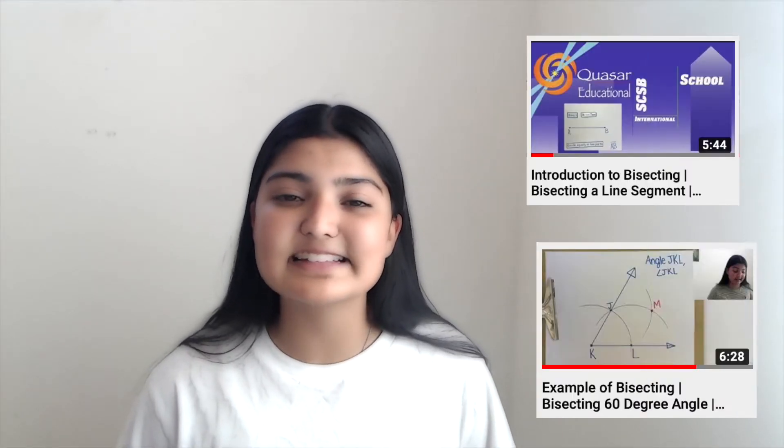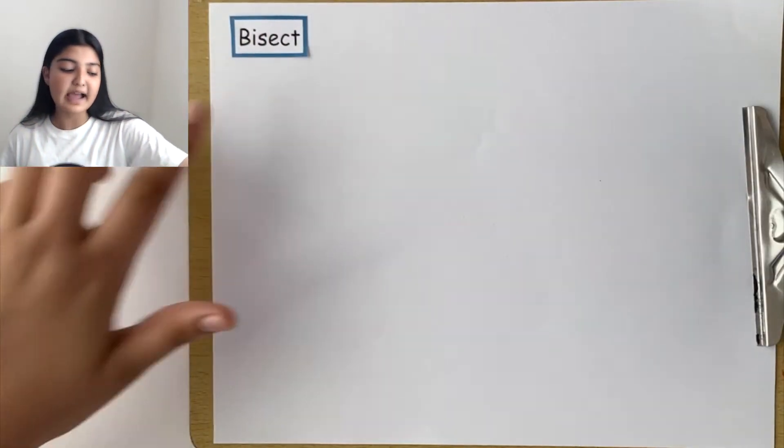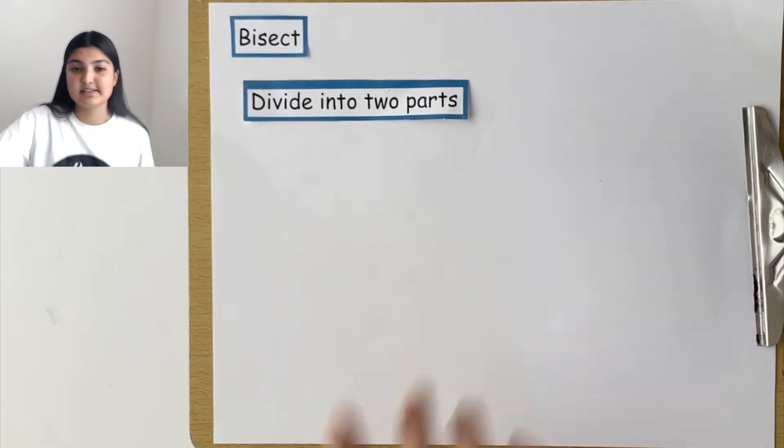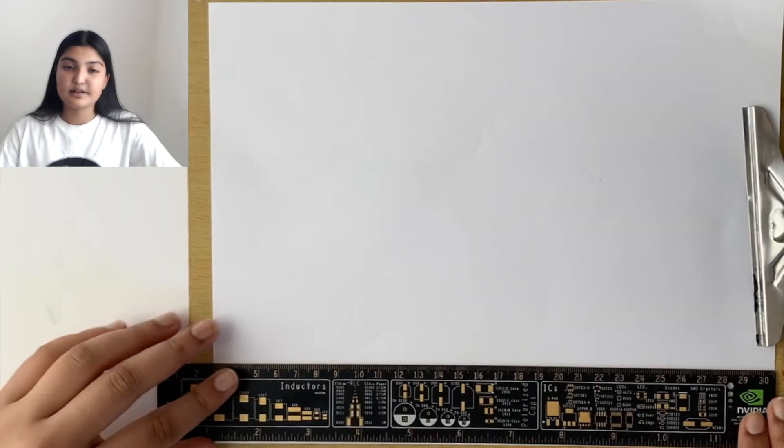So far we've bisected a line segment and a 60 degree angle, so today let's switch it up and bisect a 90 degree or right angle. How would we do that? What would we use and what would it look like? Keep in mind that bisect means to divide into two parts that are both equal.